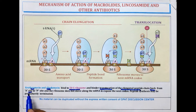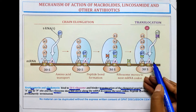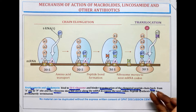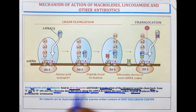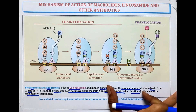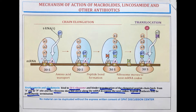The translocation of the elongated peptide chain back from the A site to the P site is inhibited by Erythromycin and Clindamycin. Also, the ribosome does not move along the mRNA to expose the next codon, so the mRNA does not move further to expose the new codon and peptide synthesis is prematurely terminated. That was the mechanism of action for Erythromycin and Clindamycin.